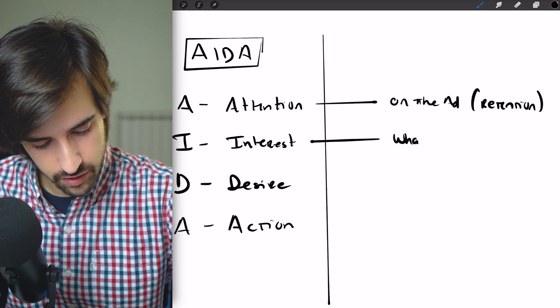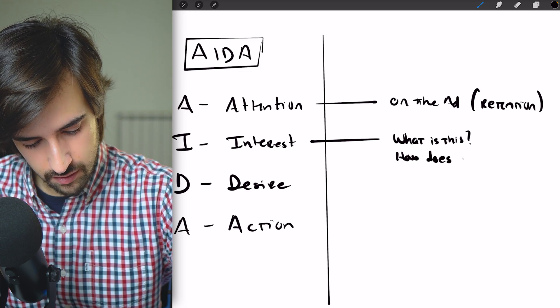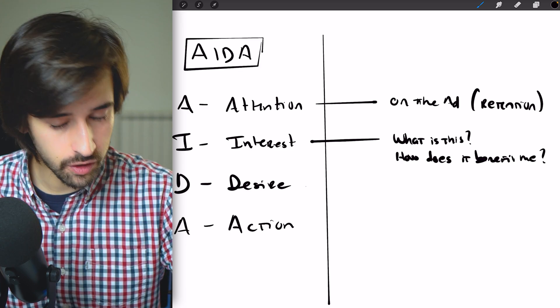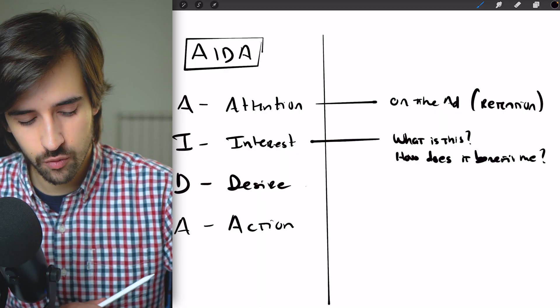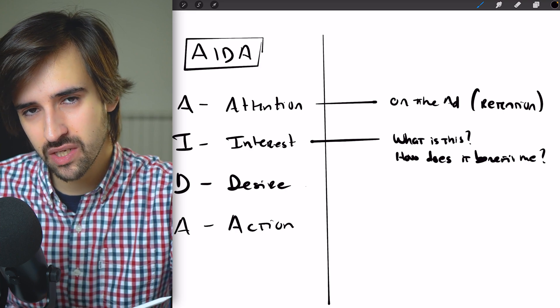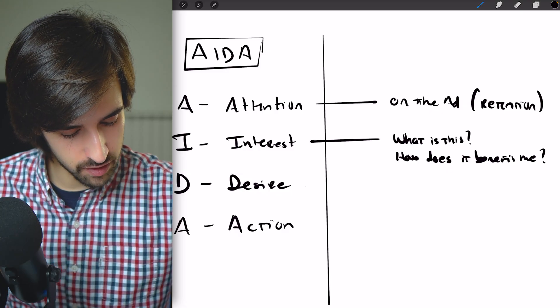Then Interest is about answering: what is this, and how does it benefit me? We're going to answer these two questions in the interest section of the website — that's the section that comes right after the header. First you need to retain attention and make it visually appealing, and then you need to explain to the customer right away what this is and how it benefits them. How it benefits them is the answer to: why is this worth my time? If it benefits me, then it's worth my time.